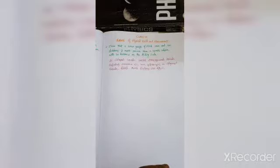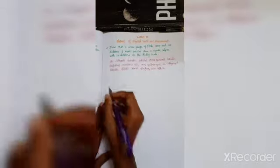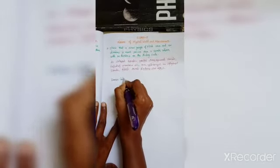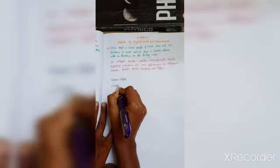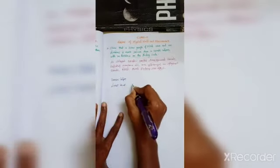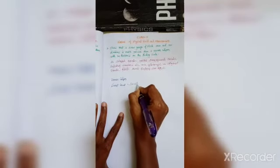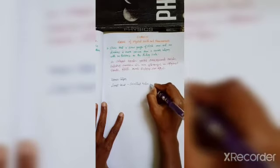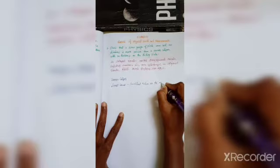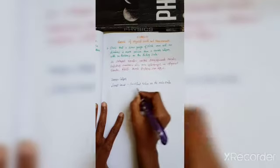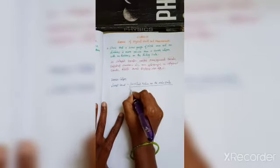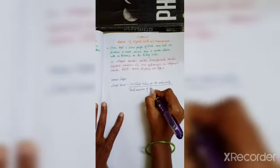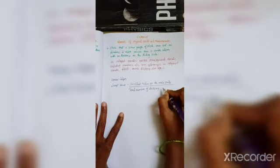First, we will start with least count. Vernier caliper least count. The least count is calculated by dividing the smallest value on the main scale by the total number of divisions on the vernier scale.